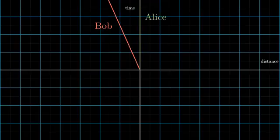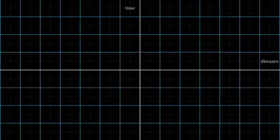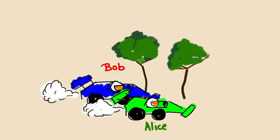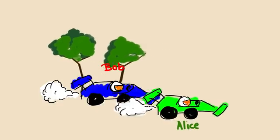We can plot their positions as a function of time on a distance time graph. Time increases vertically and it shows Bob falling increasingly behind Alice over the course of the race. Bob sees Alice moving further and further ahead. From his perspective, their motion looks different.